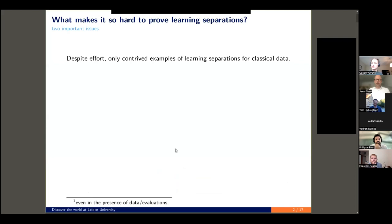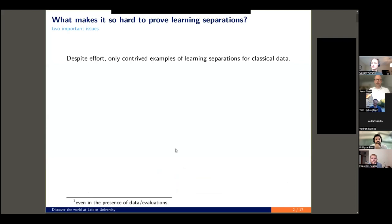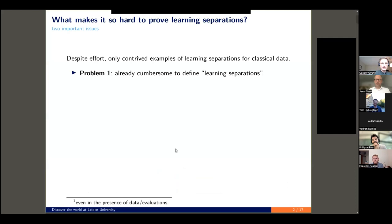Despite effort by a rather large community, only contrived examples of learning separations are known for classical data. They're more on the side of quantum data, but really for classical data it's only contrived cryptography-inspired data sets. There are two problems I encountered when studying this: it's already quite cumbersome to define what we mean by a learning separation.